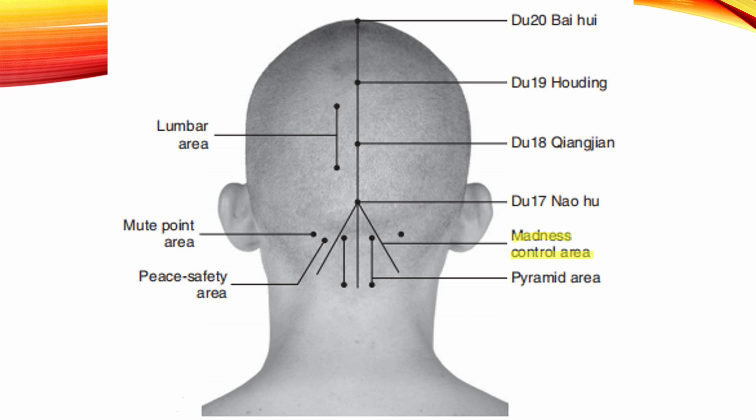Madness Control Area. Location: Starting at DU 17, which is located superior to the external occipital protuberance, use a 35 degree angle toward the lateral side of the second cervical vertebra. Indication: Spirit and emotional disorders.